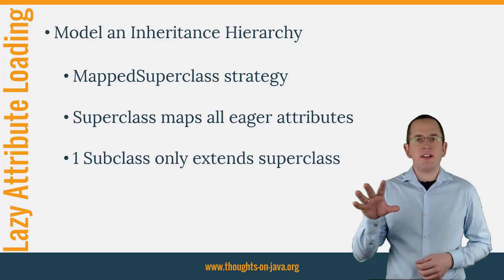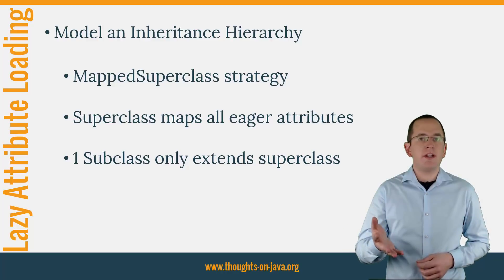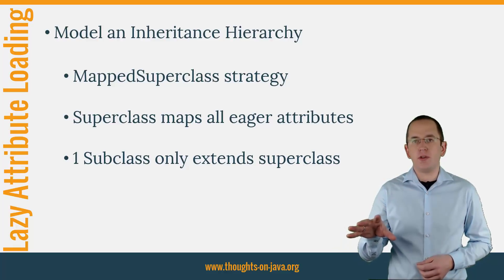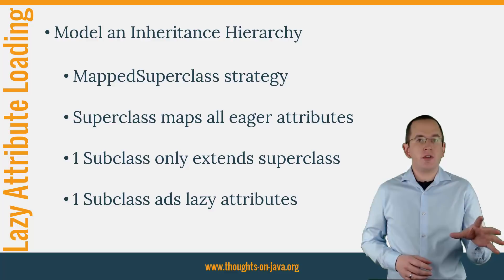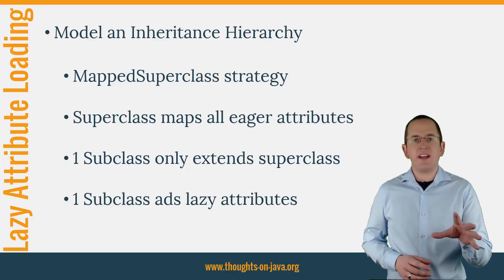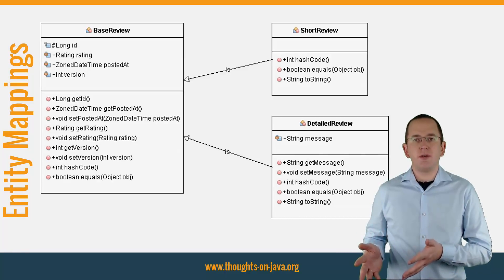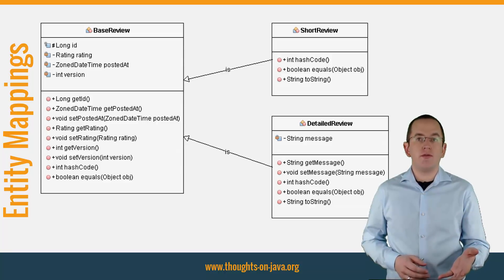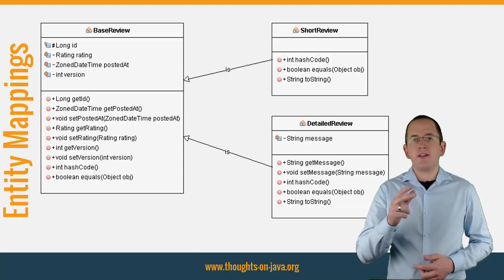One of the subclasses extends the superclass without adding any attributes. The sole purpose of this class is to implement an entity that will get managed by your persistence context. You can use this class whenever you do not need the lazily loaded attribute. The second subclass maps the lazily fetched attribute and you can use it when you need all the information stored in that database table.